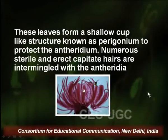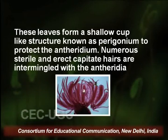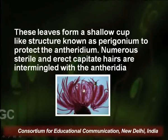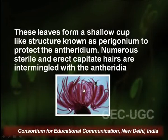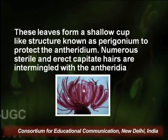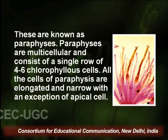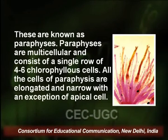These perigoneal leaves are compactly arranged and are larger than the vegetative leaves. They form a shallow cup-like structure known as perigoneum, which protects the Antheridium. Numerous sterile and erect capitate hairs are intermingled with the Antheridia, found between the Antheridia and perigoneum leaves. Their function is protection of the young and developing Antheridia. These long erect hair-like structures are termed paraphysis.